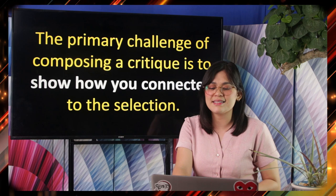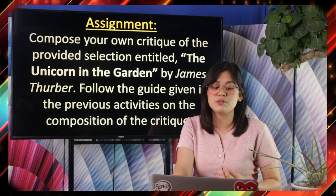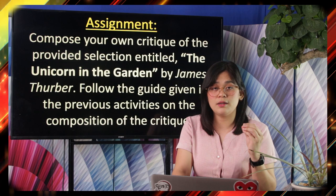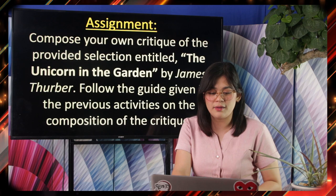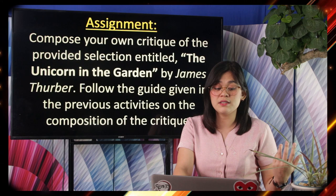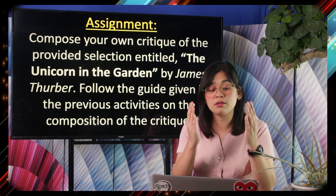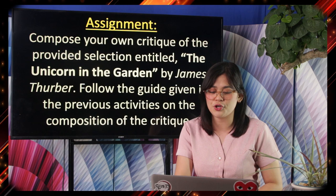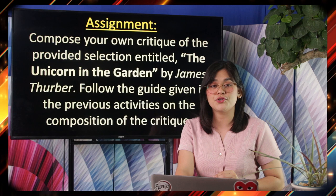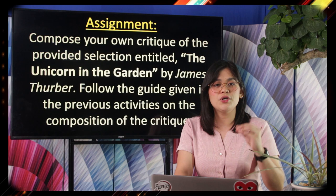Before we end our discussion, I am going to give you your assignment. Compose your own critique of the provided selection entitled The Unicorn in the Garden by James Thurber. This literary piece is found in your Quarter 3, Module 3. Follow the guide given in the previous activities — the same nine questions used for The Three Little Pigs — but apply them to The Unicorn in the Garden by James Thurber. Submit your outputs to your respective Grade 10 English teachers on the second batch schedule of answer sheets retrieval.